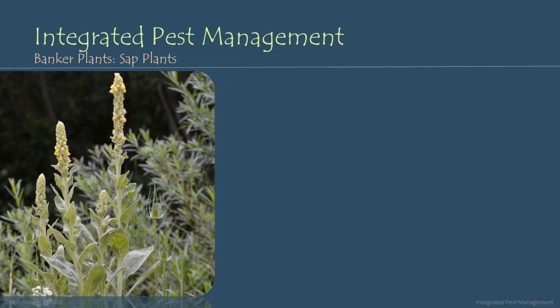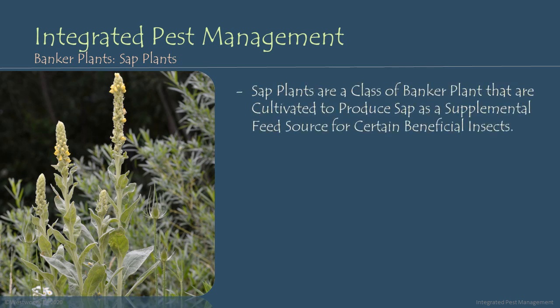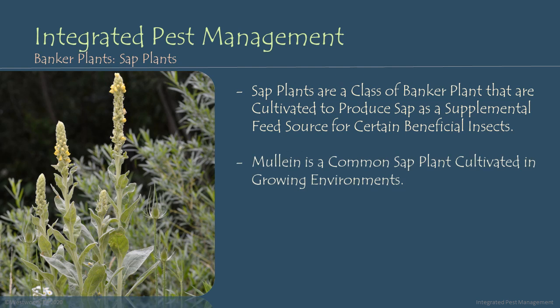Another type of plant we can cultivate inside our growing environment as an alternative feed source for certain beneficial insects is sap plants. Sap plants are a class of banker plant cultivated in the growing environment to produce sap as a supplemental feed source for certain beneficial insects. Mullein is a common example of a sap plant cultivated in many growing environments.